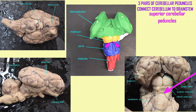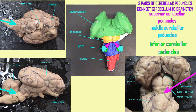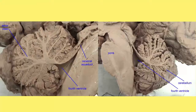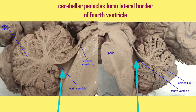The middle cerebellar peduncles connect the pons to the cerebellum, and they are easily seen both on the ventral view of the pons, and also on the lateral view where the pons meets the cerebellum. There are inferior cerebellar peduncles connecting the medulla to the cerebellum. They form the lateral border of the fourth ventricle, and so in a midsagittal section, one can observe the fourth ventricle. The cerebellar peduncles form the wall of this.